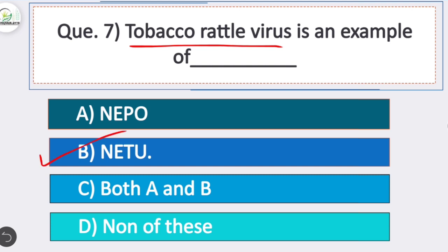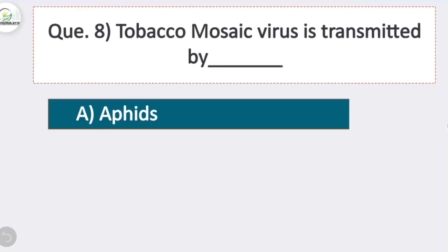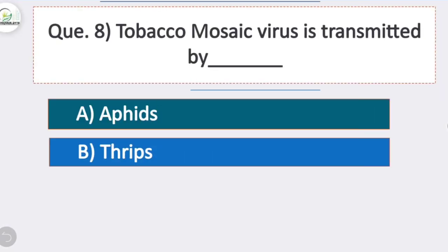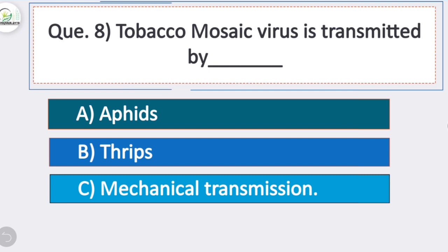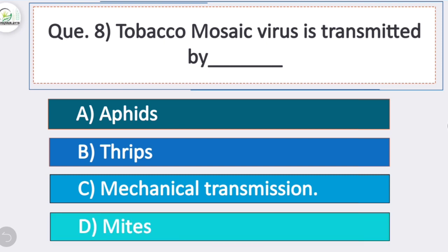Question 7: tobacco rattle virus is an example of? Option B is correct — NeTu. NeTu stands for nematode-transmitted tubular particles, also known as Tobravirus, and the example is tobacco rattle virus.